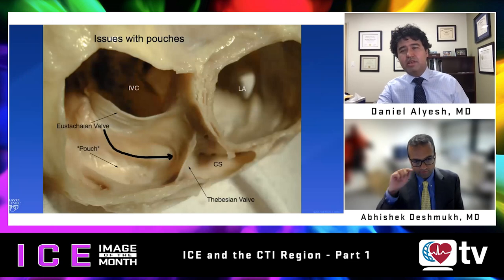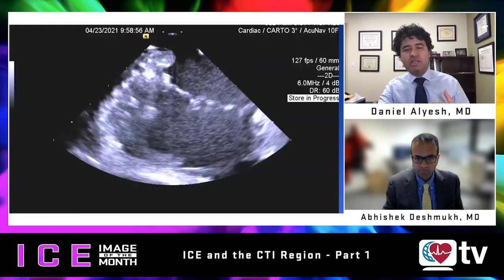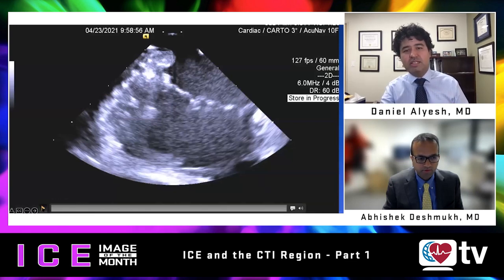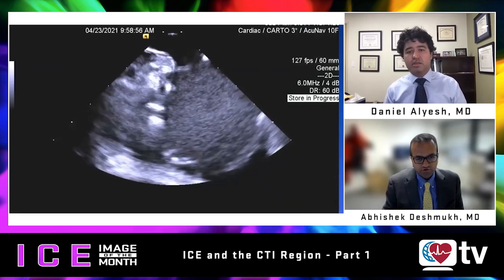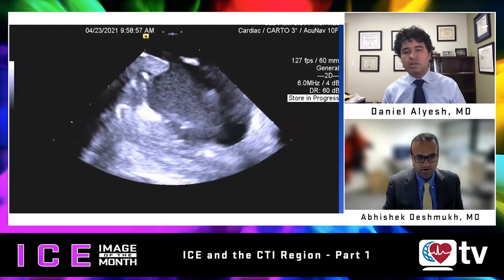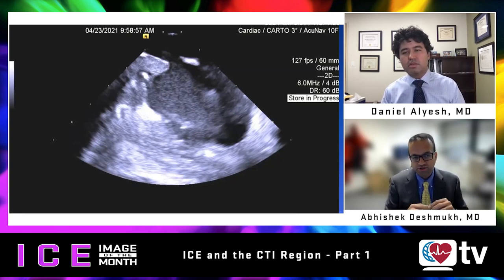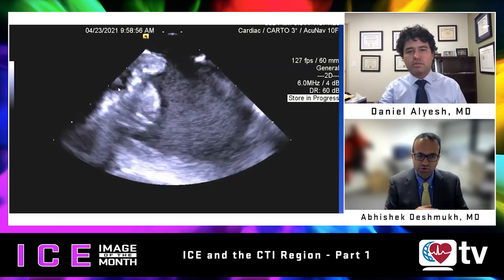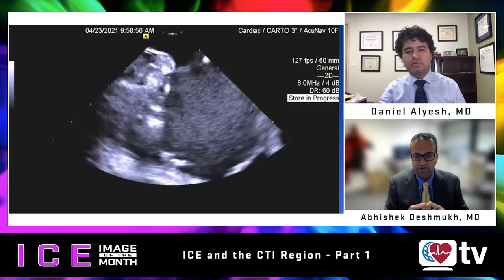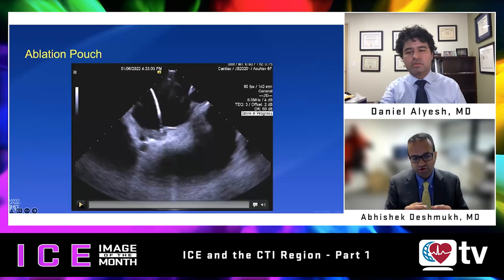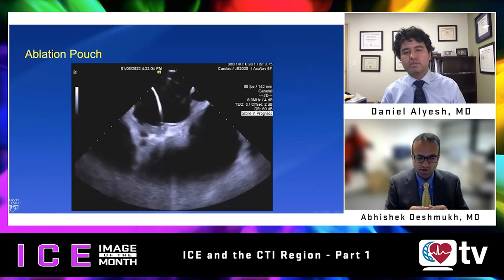Moving to the next topic: pouches and pectinate muscles impacting the CTI. As soon as the ICE catheter goes up and we see a complex CTI, we wonder how we are going to tackle it. You can see a very deep pouch in the middle of the cavotricuspid isthmus. There are two issues with pouches: ablation within the pouch, and if you're not using ICE, you could miss the pouch completely, ablating both proximal and distal to it. From an ablation standpoint, blood flow is slow in a pouch, so temperature and impedance rise, there is more risk of a steam pop, and the lesion will be smaller if you can't deliver good power.